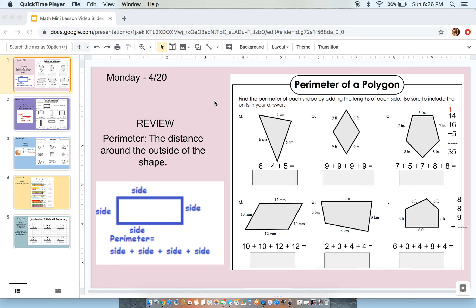It is Monday and today we are reviewing perimeter. We've done a lot of work with perimeter and area, and today we're just doing another review. So perimeter is the distance around the outside of the shape.